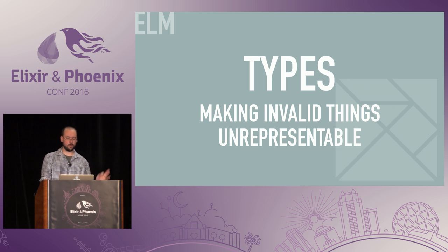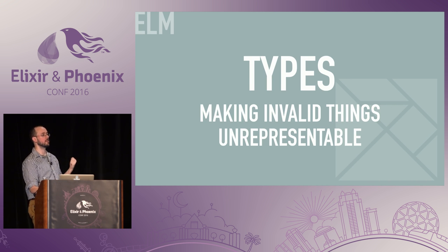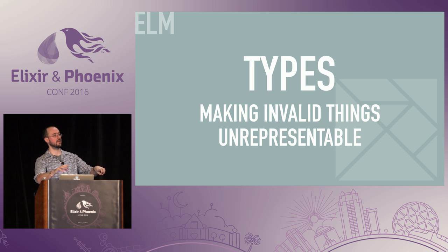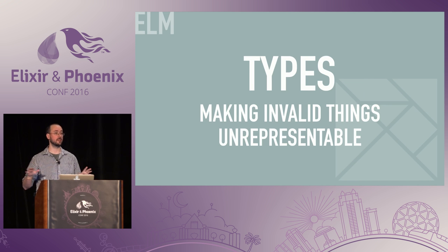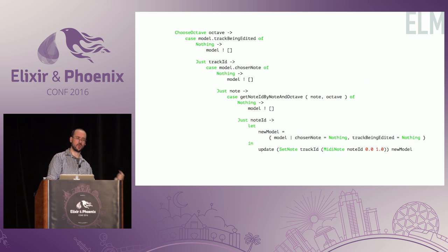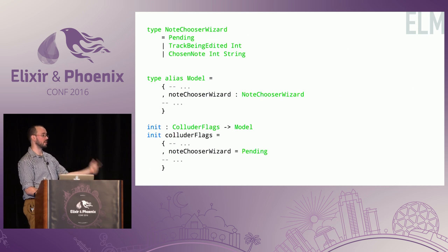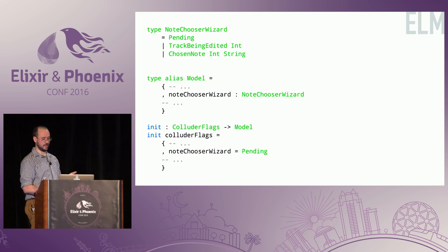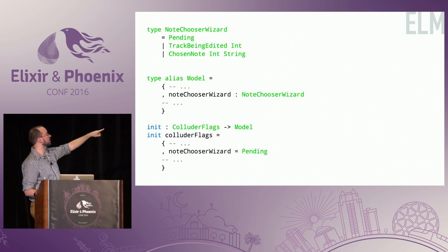I've mentioned repeatedly that the wizard was awful. This is something that Elm taught me that I hadn't learned before: you can make invalid things impossible to represent. Before, I could have had the second step of the wizard set but the first one not set. If somebody forgot to update that correctly, I'd have an invalid state in my wizard — not what I wanted the user to see — but it would type-check. It would be correct but buggy. That's what that looked like: a couple of Maybes, and we kind of inferred state from those Maybes. But why did we have to infer it at all? We're the ones writing the code.